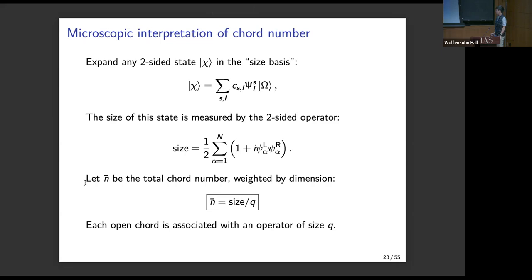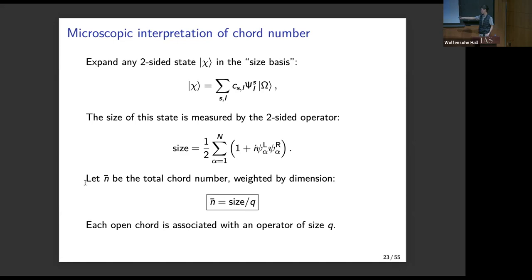Let me comment on the microscopic interpretation of coordinates. There's a notion of operator size: you take any two-sided state, expand it in the basis of fundamental fermions, and write the state with a size wavefunction S_i. The size operator, which acts by multiplication by S, is accomplished by a particular operator. It's a simple exercise to check, using this definition and the chord rules, that the size operator is given by n-bar — the total chord number — up to a factor of q. This simply says that each open chord is an operator of size q, which makes sense since individual operators are Hamiltonians and are products of q fermions.